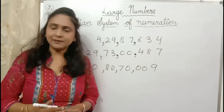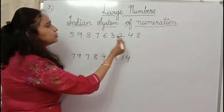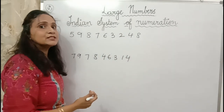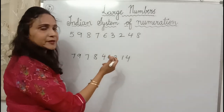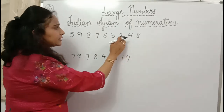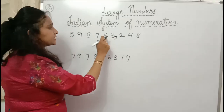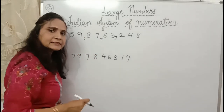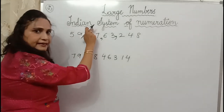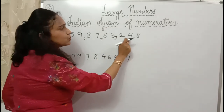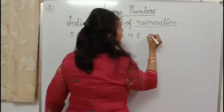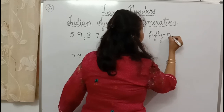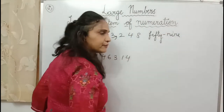I hope you understood how to read the number. Once you have understood how to read it, you can easily write the number name. In this number, first we mark the periods: ones, tens, hundreds — comma. Thousand, ten thousand — comma. Lakh, ten lakh — comma. Crore, ten crore. So let's read: fifty-nine crore, eighty-seven lakh, sixty-three thousand, two hundred forty-eight. Now let's write the number name. Will I start with a capital letter? No — I will start with a small letter. Fifty-nine crore — compound number, so we put a hyphen. No S: not 'crores', just 'crore'.